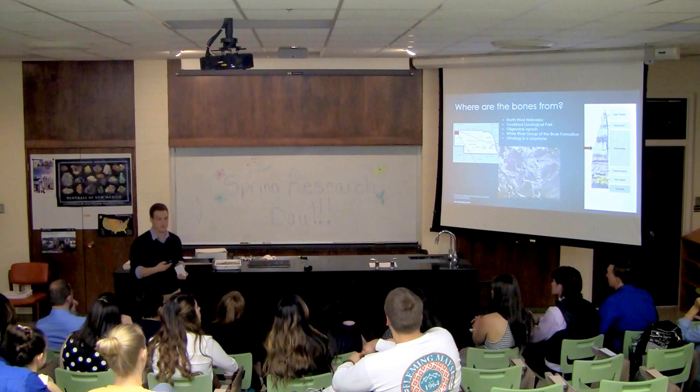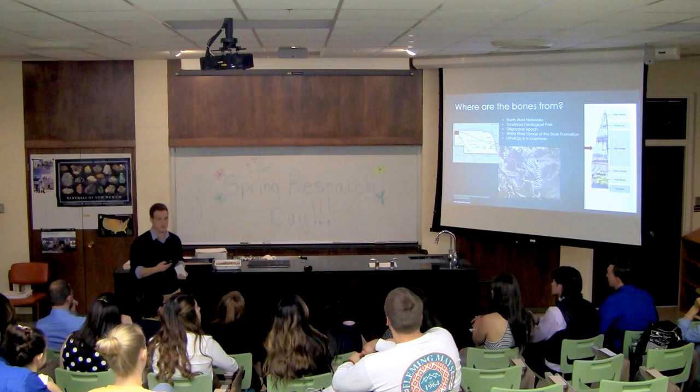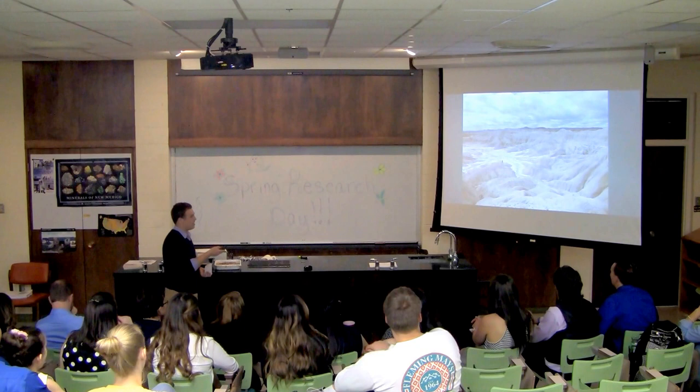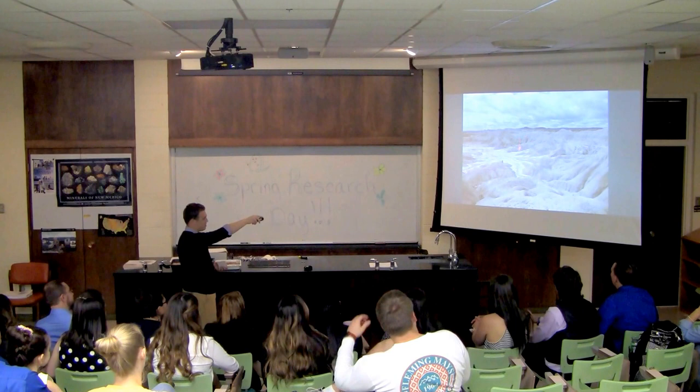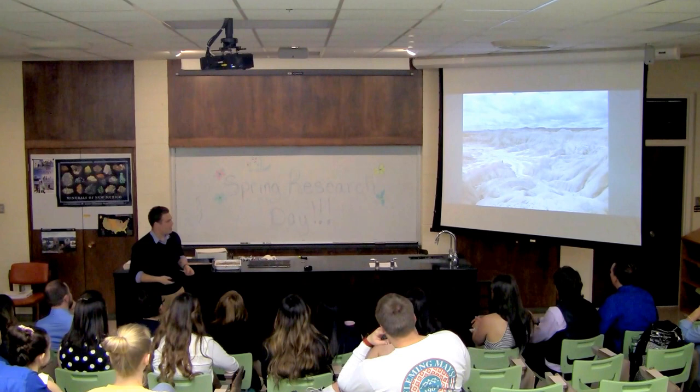The lithology here is mostly clay stones, so it makes it very easy to pull the bones out, extract them, and move them back to the lab. You can tell the difference between the two layers, the Chadron and the Brule, by the way that the slope is. Where it's really slow and white versus the sheer drops — that's the boundary line. Most of what we found was in the Brule.